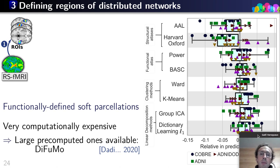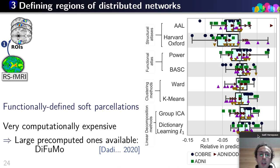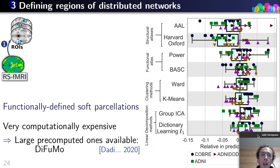These can be very computationally expensive. So recently we've provided a number of pre-computed dictionary learning maps computed with very fine resolution, known as DiFuMo, available for download on a website.